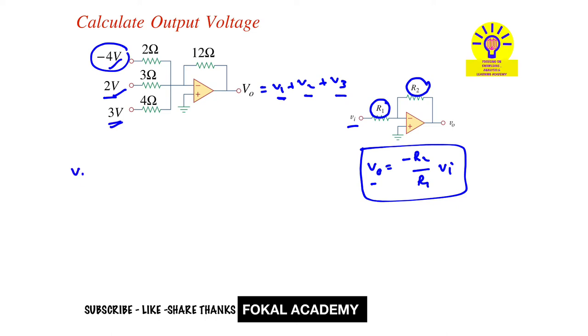So V1 equal to minus 2 ohms divided by 2 ohms into minus 4 volts. So this is R2 and this is R1 for this source. So here it becomes minus times minus equals plus, so 2 divided by 2 is 1 times 4, so 4 volts.